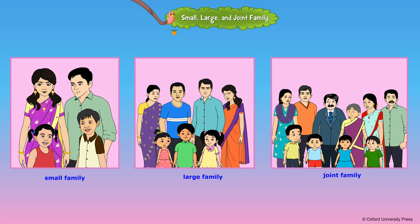A family which lives together with grandparents, parents, uncles, aunts, and their children is called a joint family.